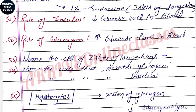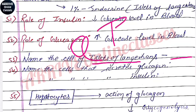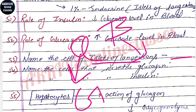Next question: name the cells of the Islets of Langerhans. There are two types of cells — alpha cells and beta cells. Glucagon is produced by alpha cells of the Islets of Langerhans, while beta cells produce insulin.